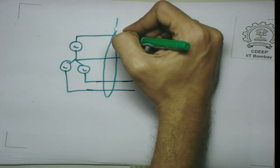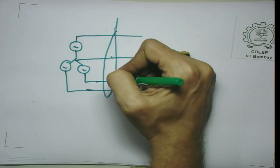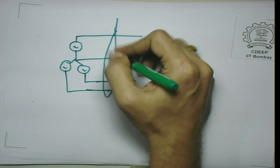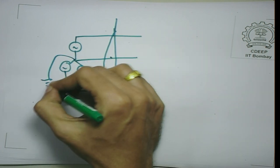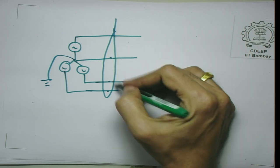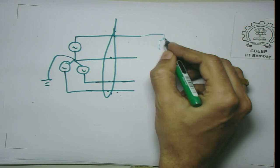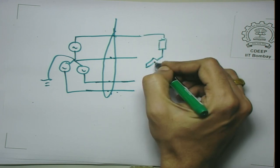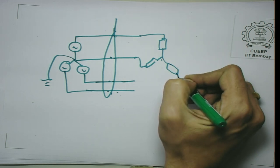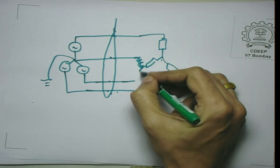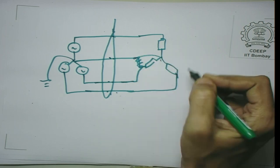In a three-phase supply with neutral, a residual current device measures I_A, I_B, I_C, and I_neutral. Under normal conditions with no ground fault, the sum of these four currents should equal zero. If current is flowing through the ground — for instance through a person's body — the sum will not be zero and the device trips, disconnecting the supply rapidly before a dangerous amount of charge passes through the body.